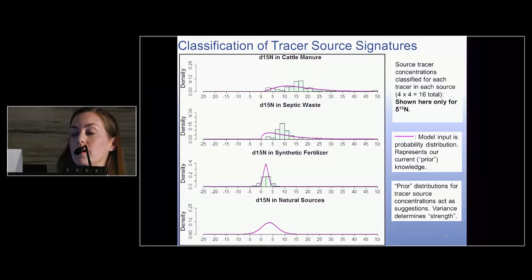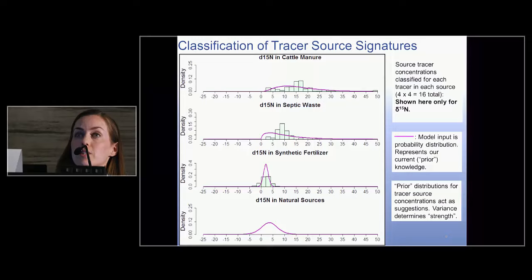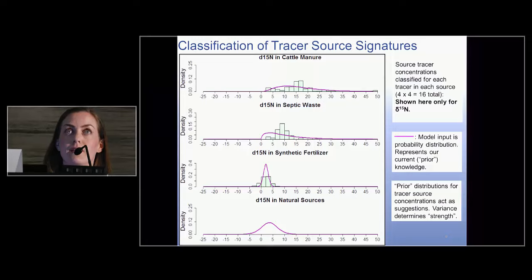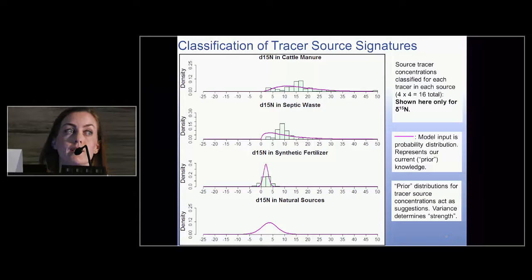These are called, in Bayesian statistics, prior probability distributions, representing our current state of knowledge of the concentration of the tracer in the source. The variance given to the probability distribution indicates your certainty — a wide variance gives the model a lot of flexibility, while a tighter variance makes the estimates more rigid.